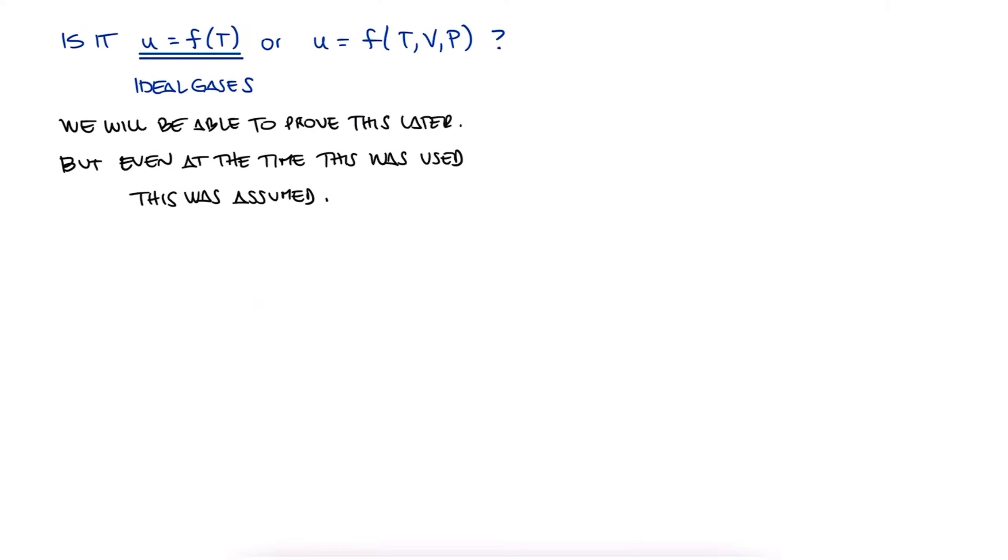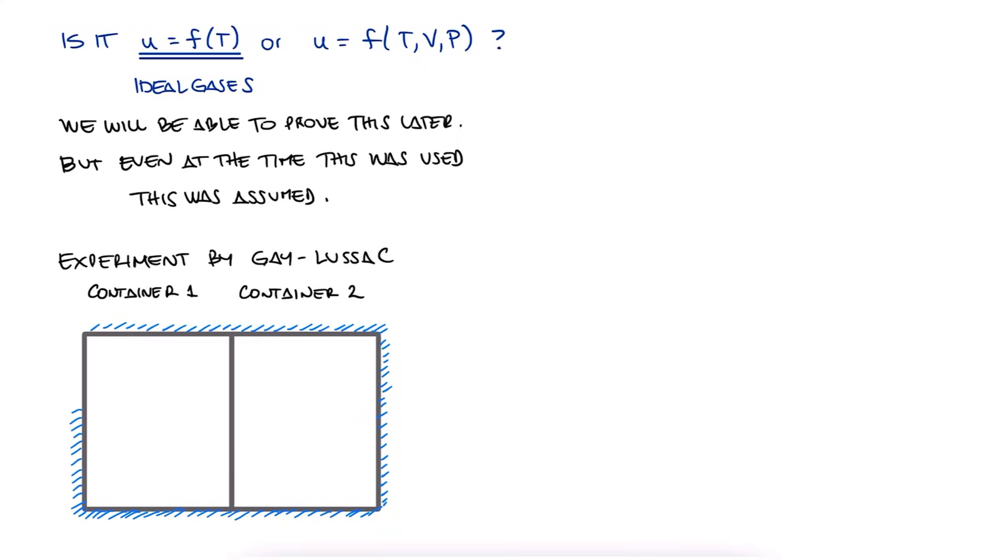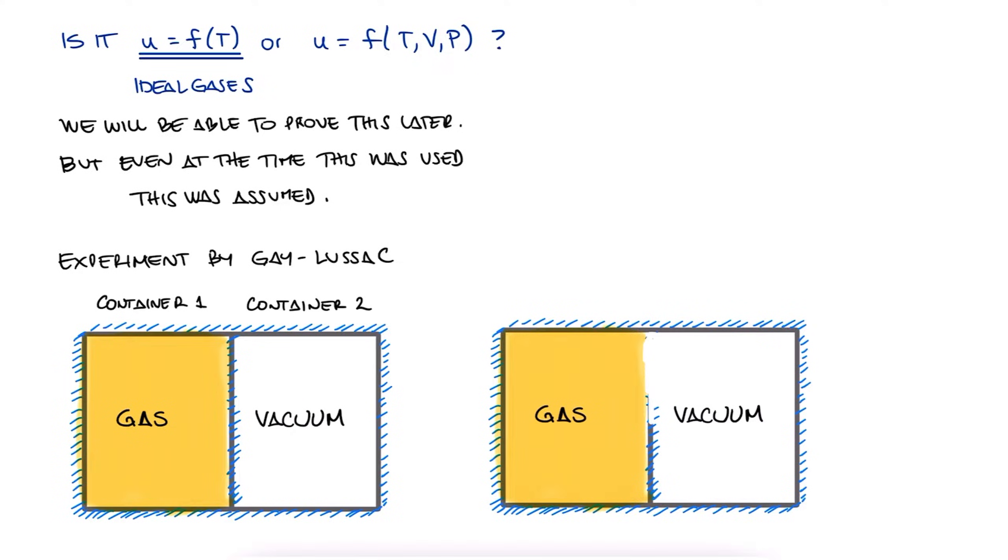In brief, the main experiment that supported this idea was performed by Gay-Lussac. Two containers, perfectly insulated, meaning no heat transfer, were connected by an insulating membrane. One contained gas, the other one nothing, pure vacuum.